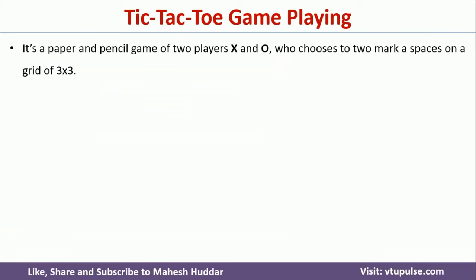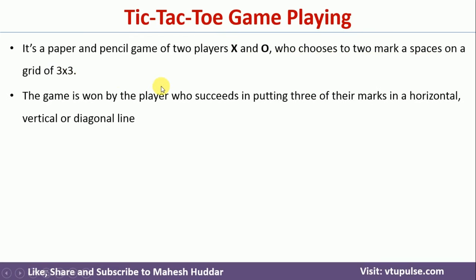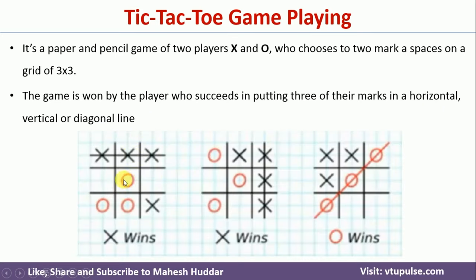As discussed earlier, tic-tac-toe game is a paper-pencil game of two players, X and O. They choose to mark the spaces on a grid of 3 by 3. The player who succeeds in putting three of their marks in a horizontal, vertical, or diagonal line will be the winner. In the first case, X is the winner. In the second case, again X is the winner, and in the third case, O is the winner, as shown in this particular diagram.